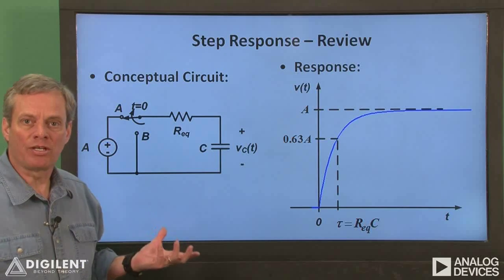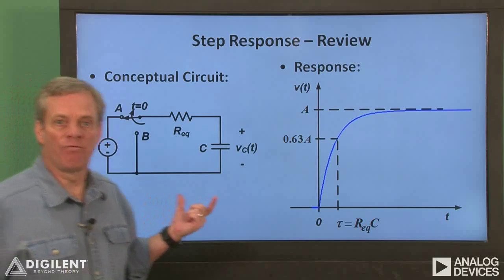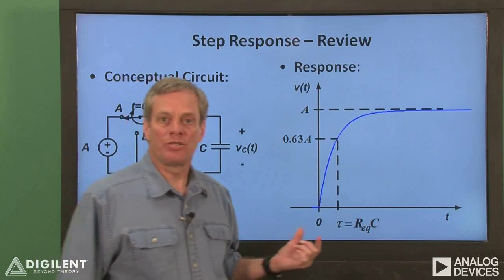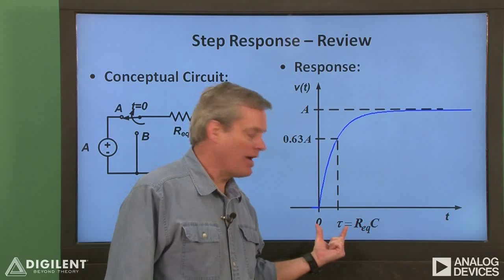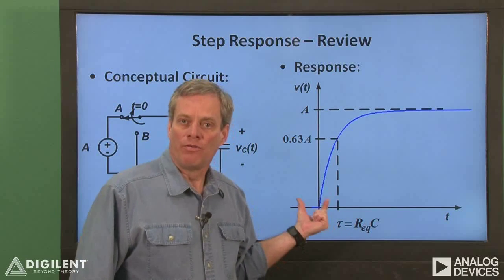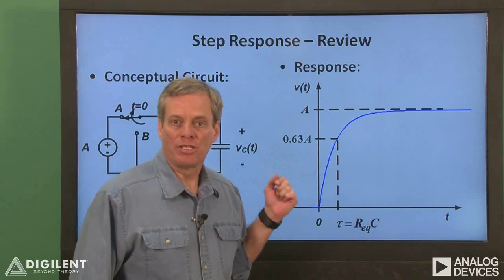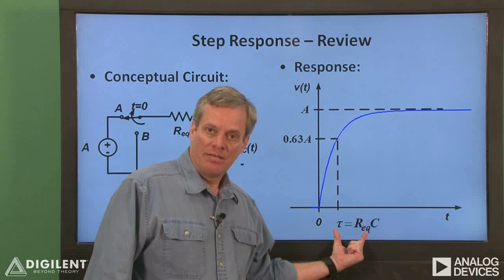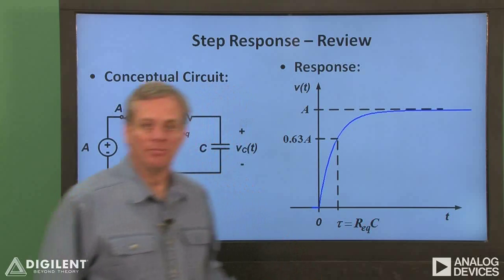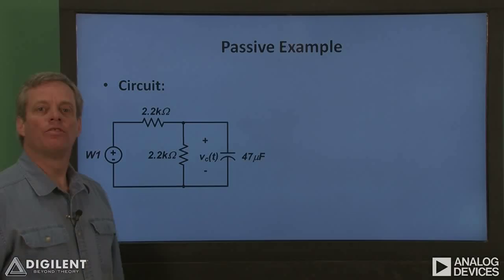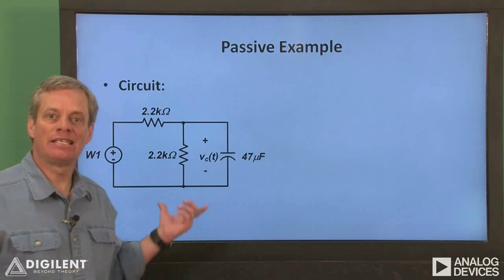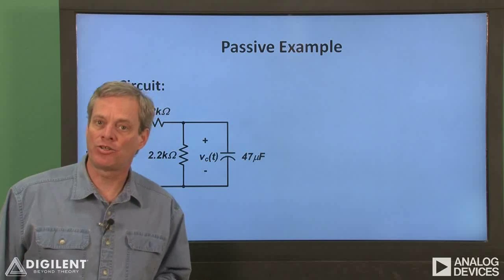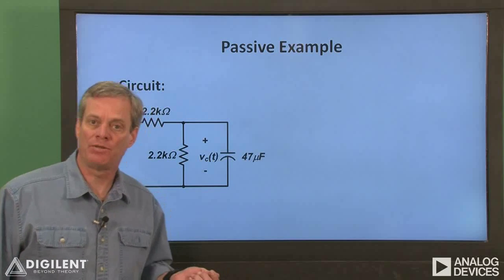When we move the switch of our circuit, the capacitor's voltage will increase as shown here. The time constant of the circuit is the amount of time required for the voltage to get to about 63% of its final value. It's the equivalent resistance seen by the capacitor times the capacitance. The first circuit we'll examine here is exactly the same as the second circuit we looked at in our natural response lab video for this chapter.